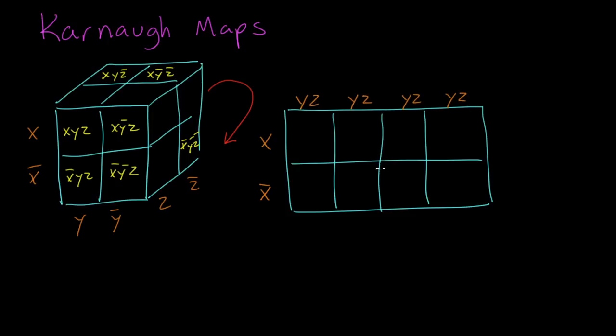Now watch the way they get labeled here. The first one here is yz. The next one is not yz. The third one is not y not z, and the fourth one is y and then not z. This is a gray code. A gray code is a way of writing down binary numbers so that only one of the bits is changing at a time.